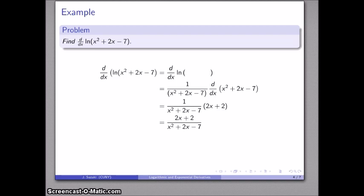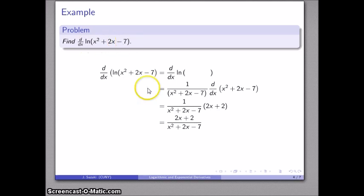A useful check to make sure you're applying the derivative rules correctly: any time you're doing the derivative of anything more complicated than a polynomial, there's always going to be an echo of the original function. Here's our x squared plus 2x minus 7 in the original function — here's our echo in the final function.